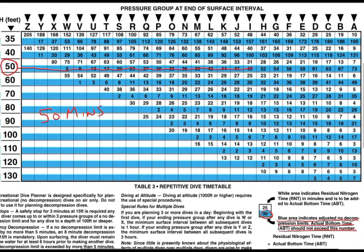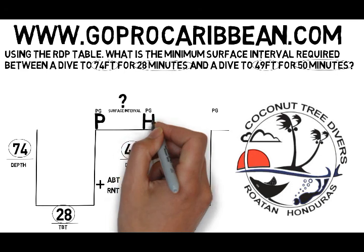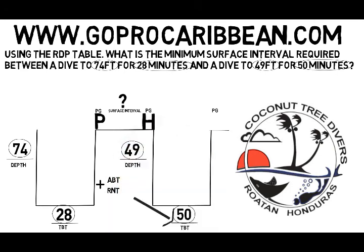We see that it jumps from 48 to 52, so we go for the 52-minute option. As long as we are in pressure group H, we will be able to dive for up to 52 minutes, and since we want to dive for 50 minutes, that's going to work. So now we realize that we need to be in pressure group H at the beginning of the second dive.